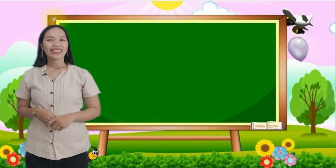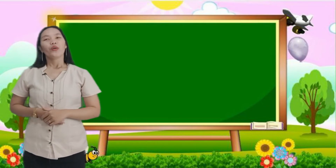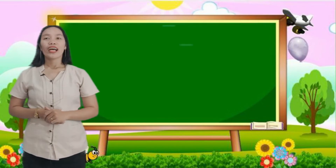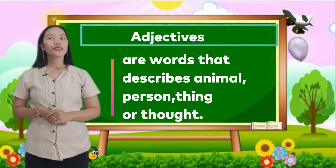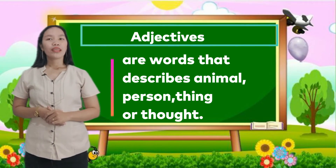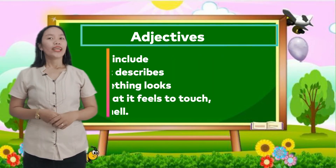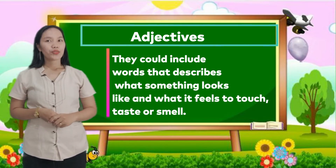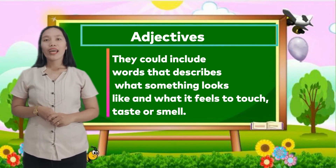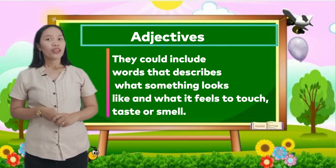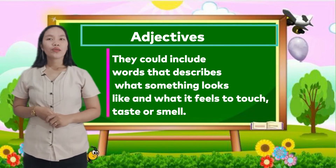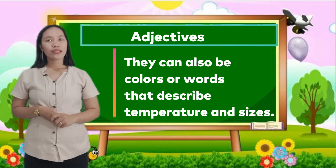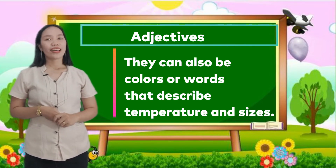Can you recall our lesson last week? Very good. We learned last week that adjectives are words that describe an animal, person, thing, or thought. They include words that describe what something looks like and what it feels to touch, taste, or smell. They can also be colors or words that describe temperature and spices.